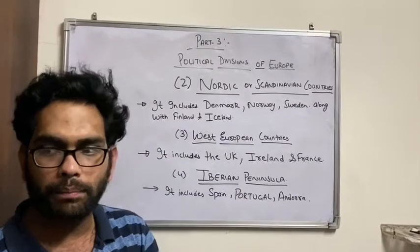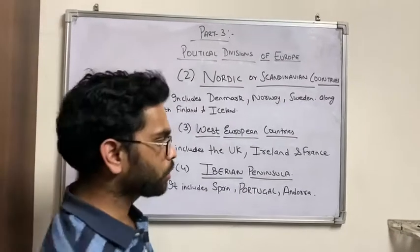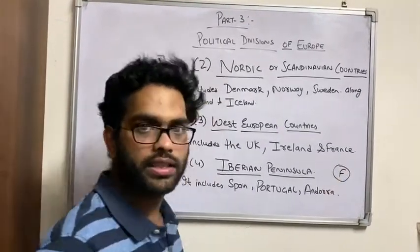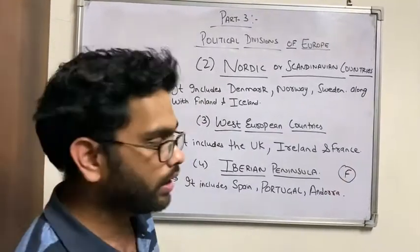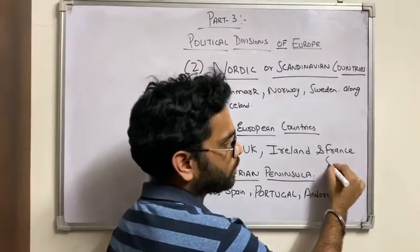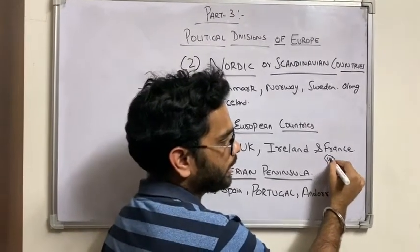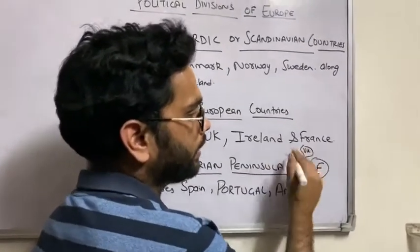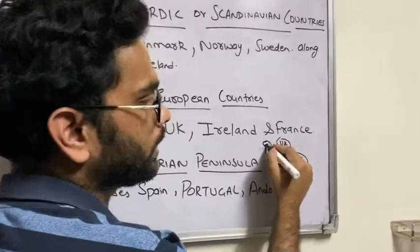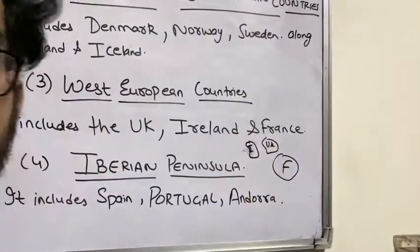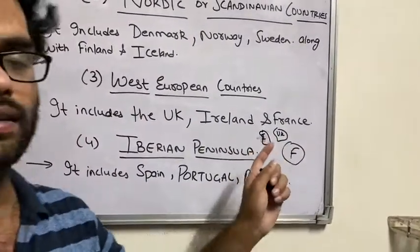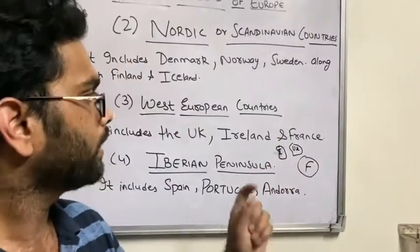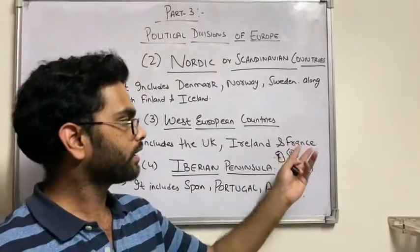As you can see on the map, this is France. If you go above France, you will see the UK, and next to the UK you will see Ireland. So this is how the West European countries are arranged: UK, Ireland, and France.